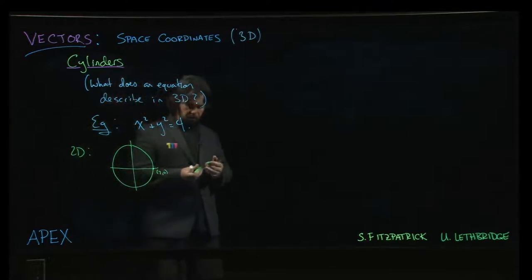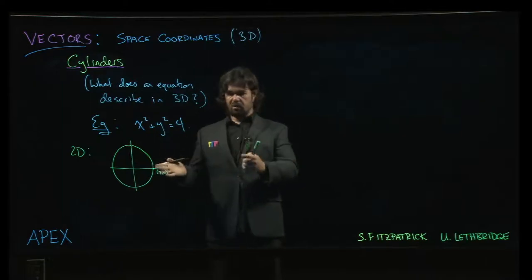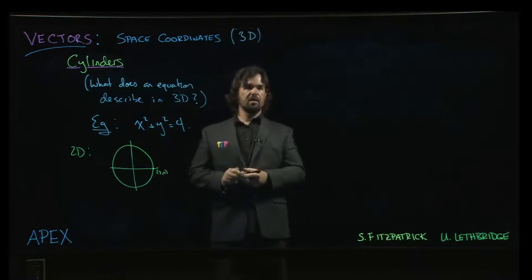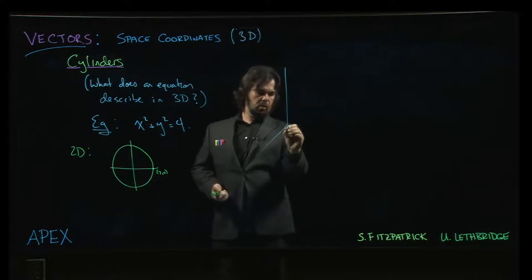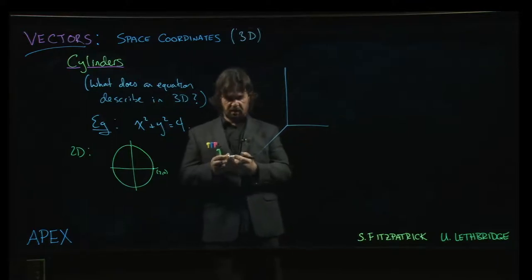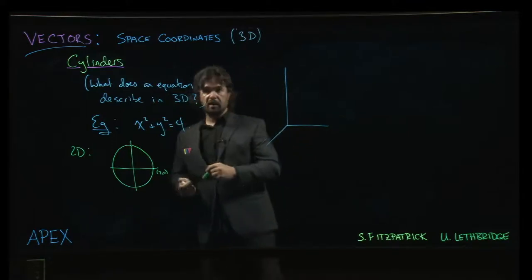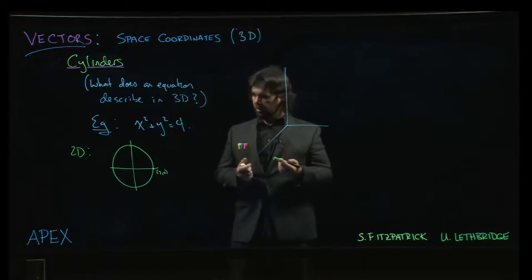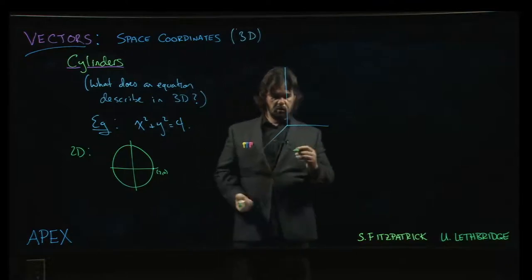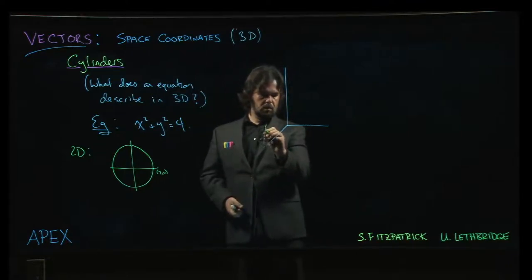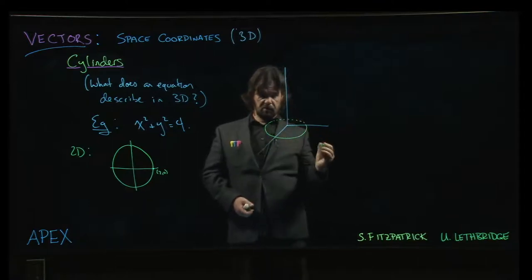But what about in three dimensions? The issue here is that that equation really says nothing about the z-coordinate. And so the z-coordinate is free, unconstrained. It can have any value that it wants. We still have the same constraint with respect to the x- and the y-coordinates. So we have, in the x-y-plane, we still have this circle.